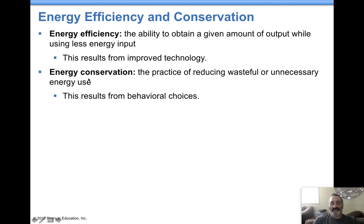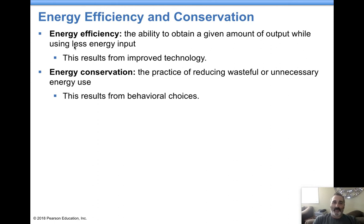Energy efficiency versus conservation: appliances are becoming more efficient, meaning you're getting more output with less energy input. An old refrigerator, for example, can be so inefficient that energy costs just to keep it running all month could pay for a brand new refrigerator. Energy conservation is like turning off your lights when you leave a room, not having things plugged in all the time — just using less energy in general.